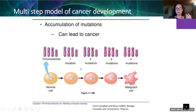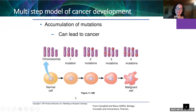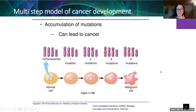These mutations have to accumulate, which is one reason we tend to see cancers later in life rather than earlier. When cancers develop in children, it's typically because the child was born with one of these mutations already — essentially a head start on developing cancer. We'll come back to this multi-step development of cancer and the accumulation of multiple mutations.